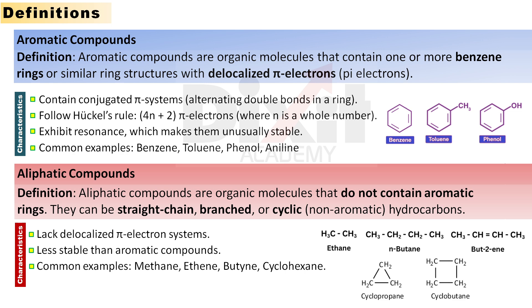Aliphatic compounds are defined as organic molecules that do not contain aromatic rings. They can be straight-chain, branched-chain, or cyclic, non-aromatic hydrocarbons.